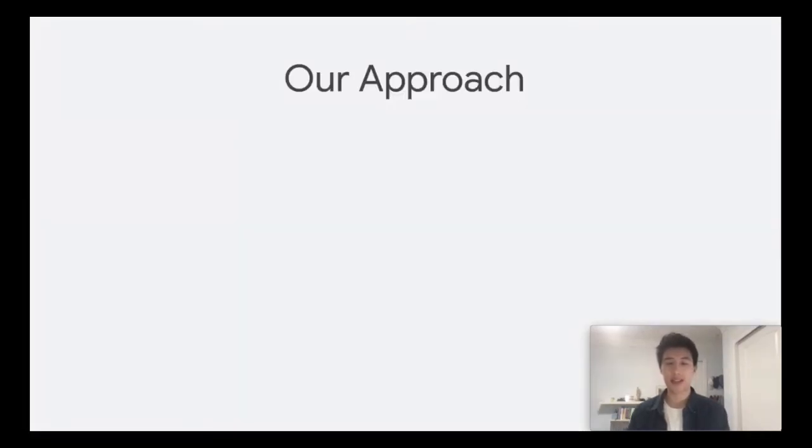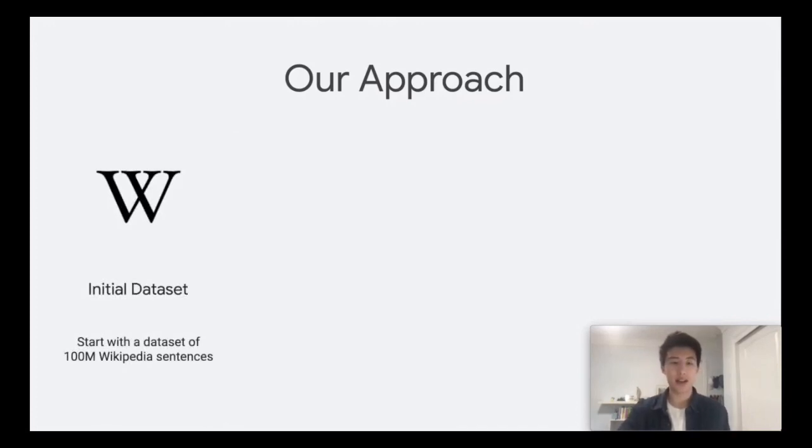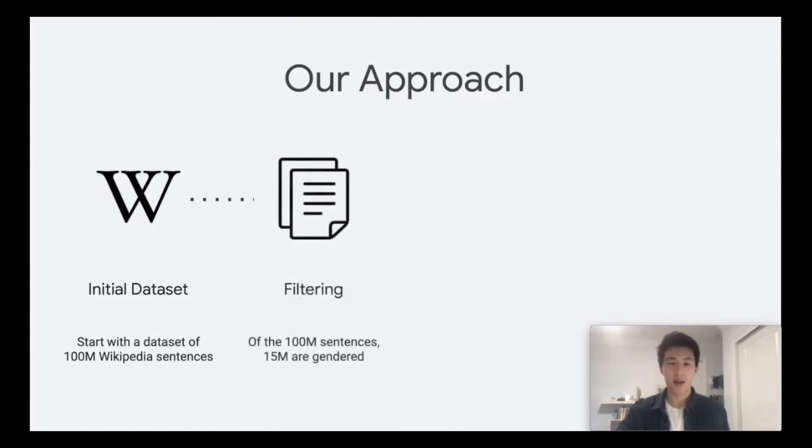For our approach, we chose to train a sequence-to-sequence model, but we aim to avoid annotating data for training, which can be expensive. To this end, we started with an initial dataset from Wikipedia of 100 million sentences. Of these, we filtered them and found that 15 million are gendered.